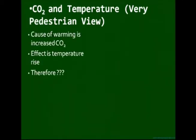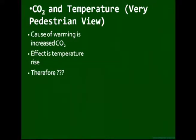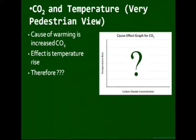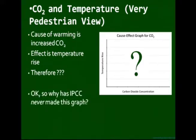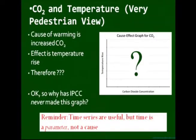Here's the very pedestrian view of that: the cause of warming is increased CO2, the effect is the temperature rise, therefore we make a plot of temperature versus CO2. You're probably asking yourself why the IPCC has never made such a graph. People in the skeptical business have unfortunately adopted the IPCC paradigm, which is to plot time series of everything. That's a necessary thing to do, but it is insufficient, because time is a parameter, not a cause.